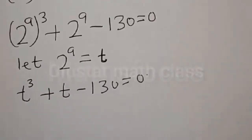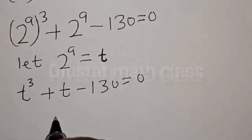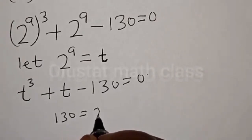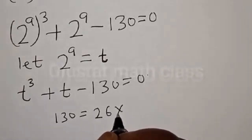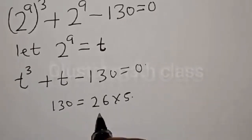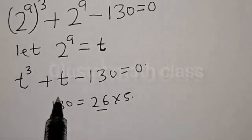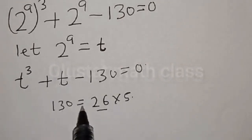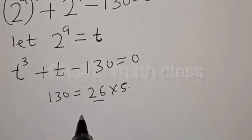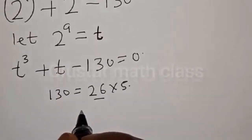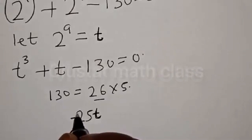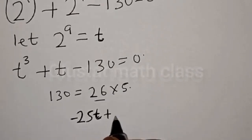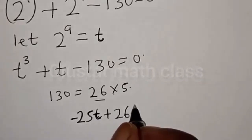Now let's see — 130 is the same thing as 26 times 5. We work on 26 and the coefficient of t here is 1. So we can write 26 as minus 25t plus 26t.